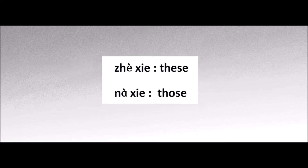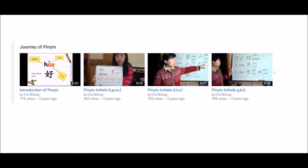When we talk about a group of things, we need these two demonstratives: 这些 — these. 那些 — those. If you have any problem with how to pronounce the Mandarin pinyin, please check the playlist 'Journey of Pinyin' on my YouTube channel. It covers a complete course about Mandarin pinyin.